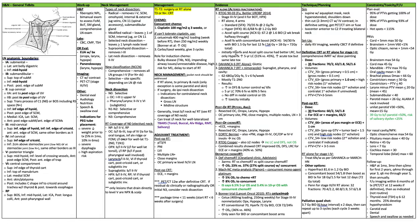Initially, the hyperfractionated arm (81.6 Gy in 68 fractions) and the accelerated split course (67.2 Gy at 1.6 Gy BID) had better locoregional control. But only the hyperfractionated arm had improved five-year local control on longer follow-up: 51% versus 45%. There was an increase in acute toxicity, but the same late toxicity.